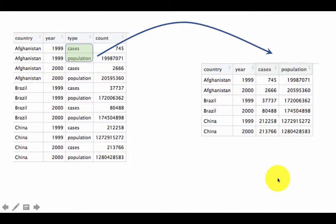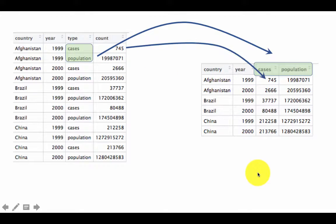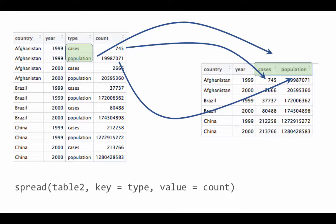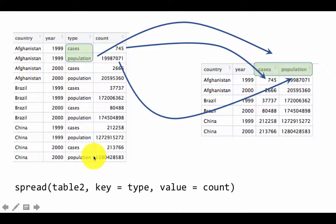Effectively, what's happening is that the unique values of the type column will become column names, and the individual values will go into the appropriate columns. We can achieve that using the function spread. Since we are spreading data from one column across multiple columns, we call it spread.